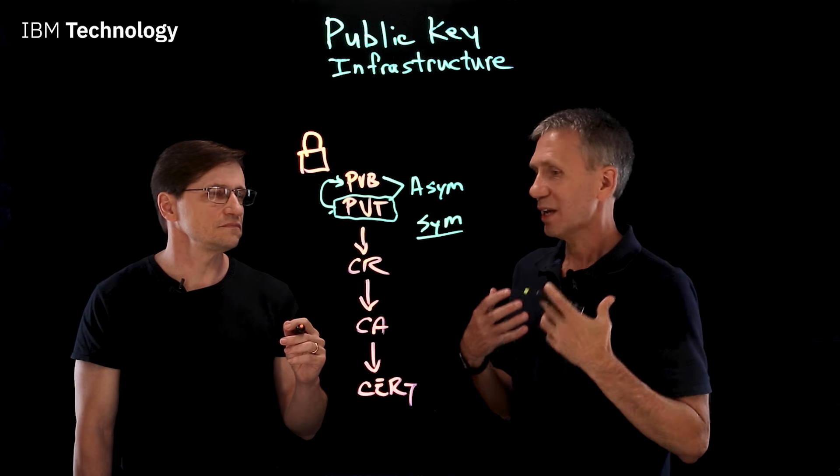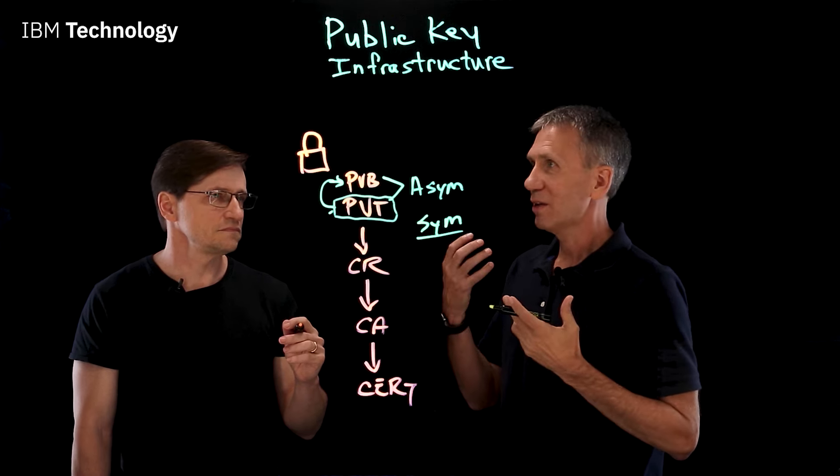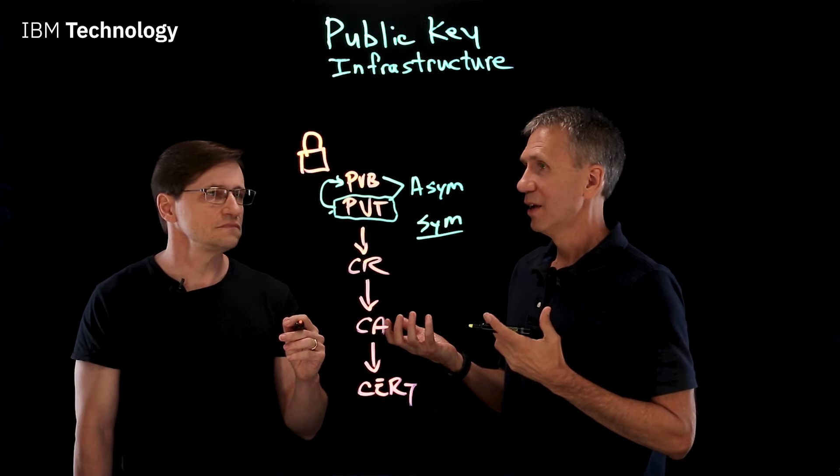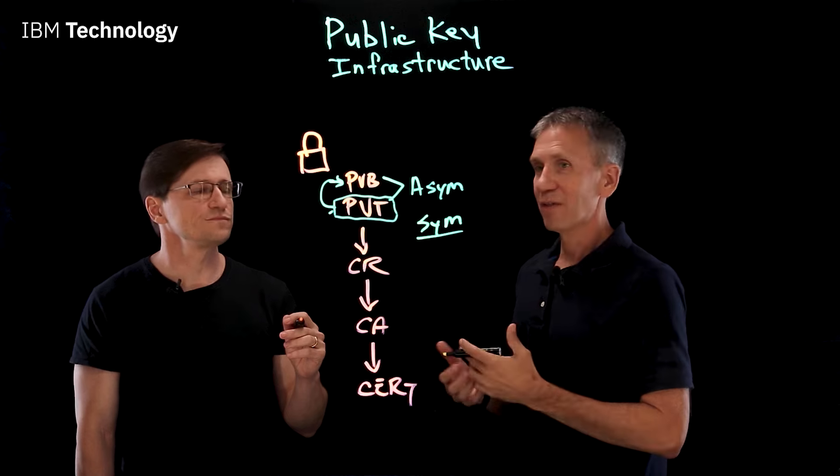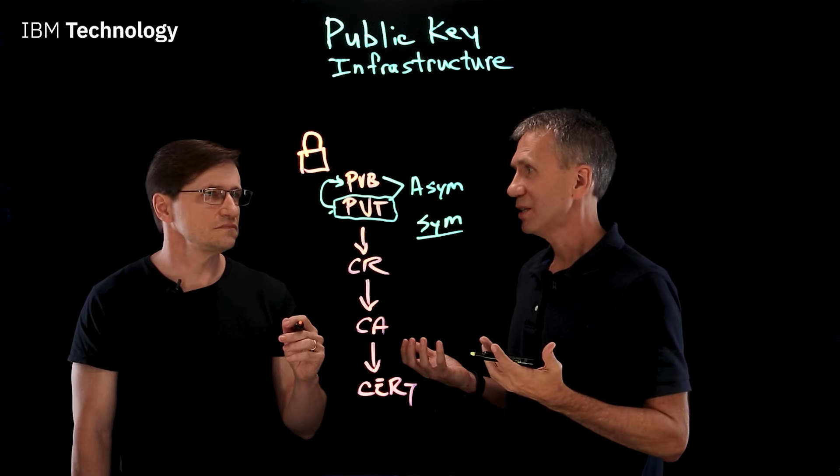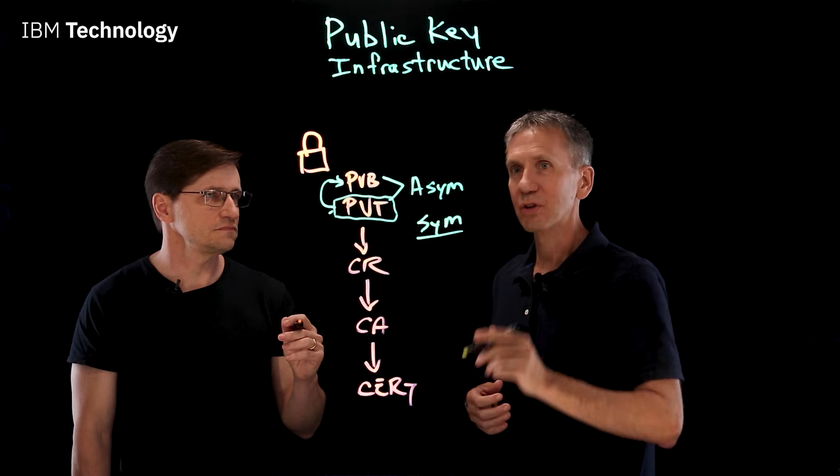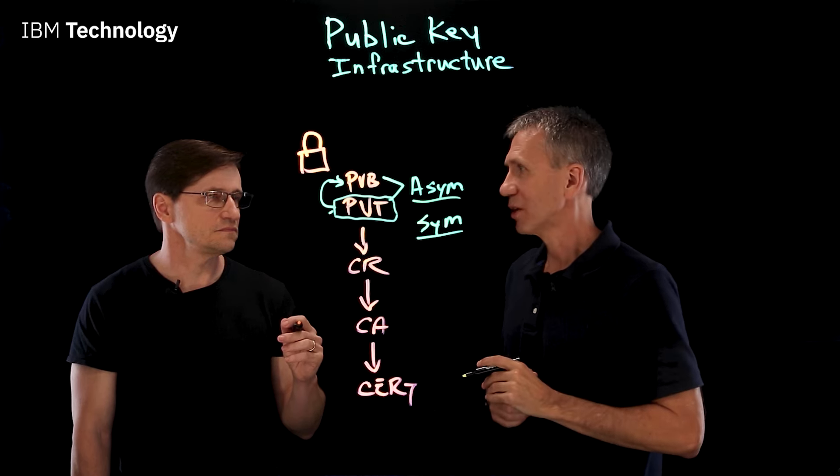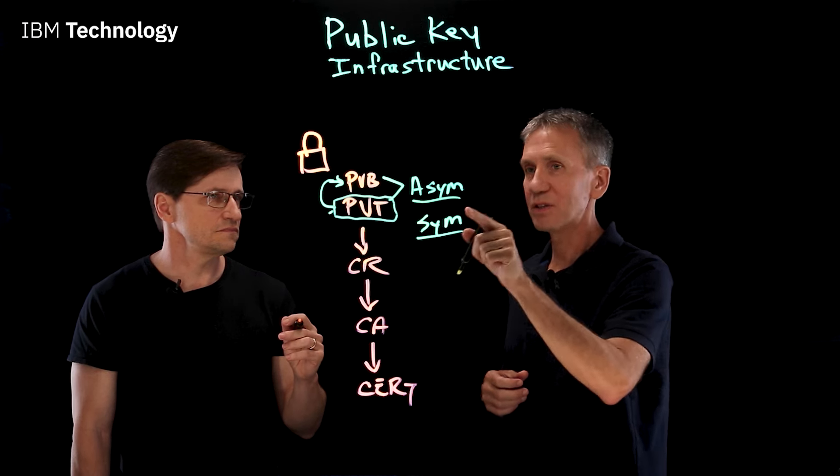The downside with symmetric is exactly the problem you said. If I generate a key and I encrypt a message with it, now I need a way for you to know what that key is. And if I just sent you the key in an email, someone might intercept it. If I come up with some other kinds of means to send that to you, then they're all different kinds of problems.